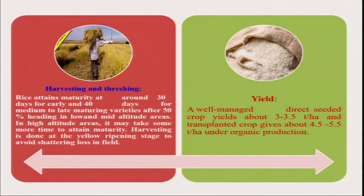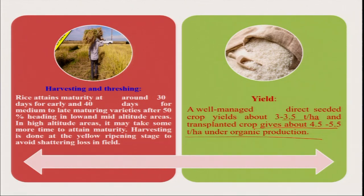By following this scientific process, we can grow rice organically. Even for well-managed direct-seeded rice, the crop yield is 3 to 3.5 tons per hectare under organic production. For transplanted rice, it is 4.5 to 5 tons per hectare. So there is not that much yield reduction. We can grow rice organically, and if certification is done and proper marketing facilities are available, we can earn huge income — especially for specialty rice like basmati and scented rice varieties.